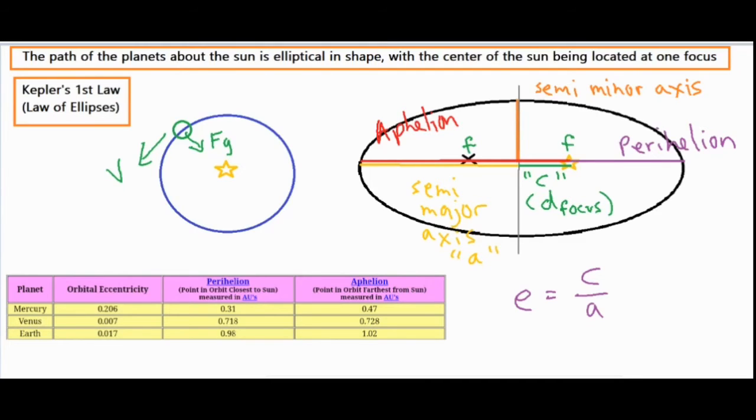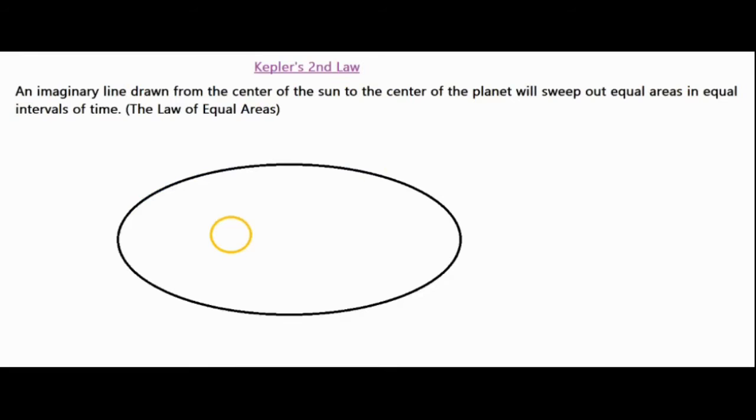Let's go ahead and take a look at Kepler's second law. Kepler's second law is showing that an imaginary line drawn from the center of the sun to the center of the planet will sweep out equal areas in equal intervals of time, known as the law of equal areas.